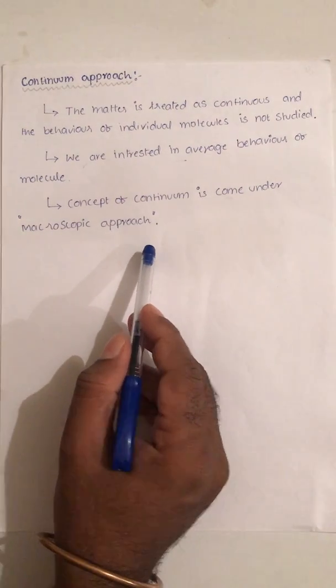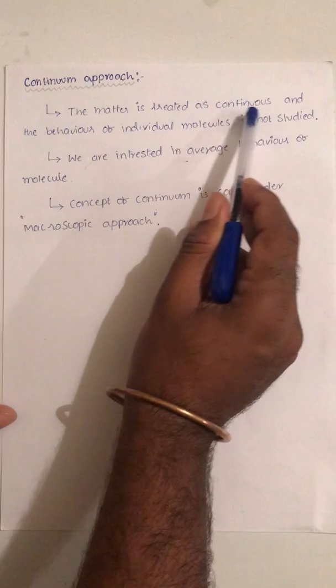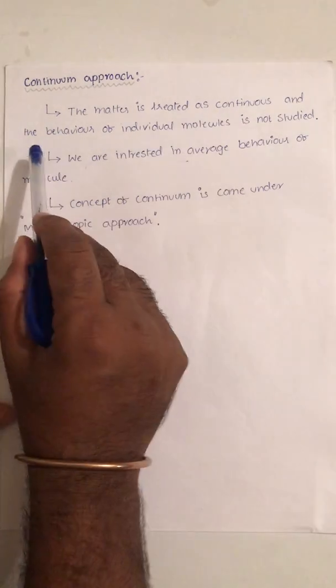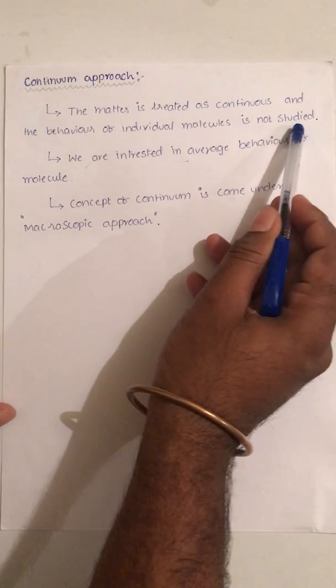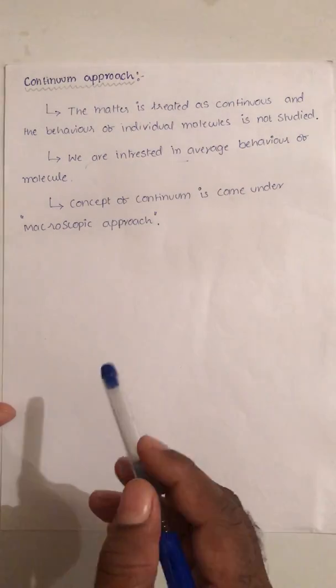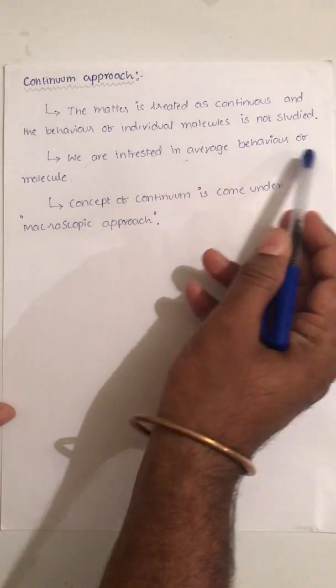The continuum approach means three simple points I have written. The matter is treated as continuous, and the behavior of individual molecules is not considered, is not studied at all. That means we are not interested in individual behaviors; we are interested in average behavior of the molecule.